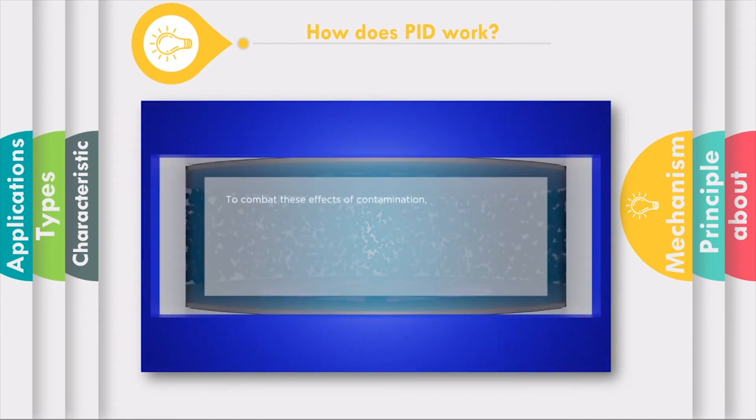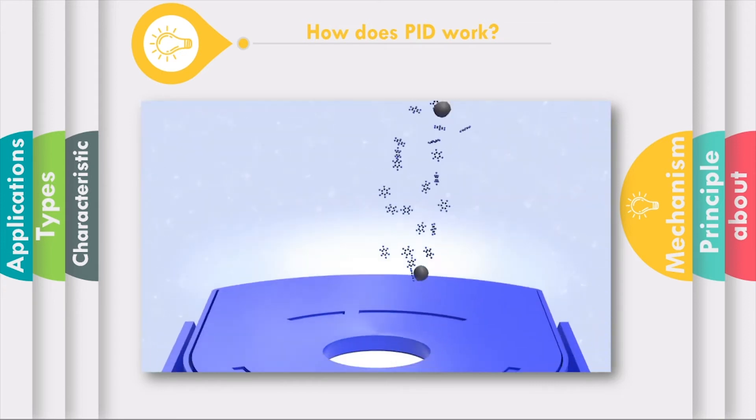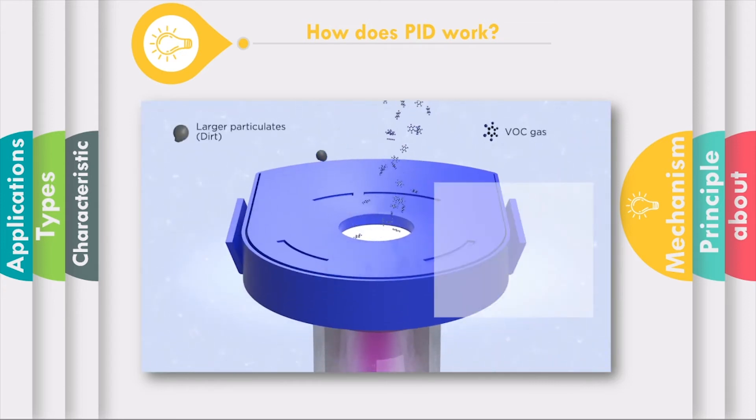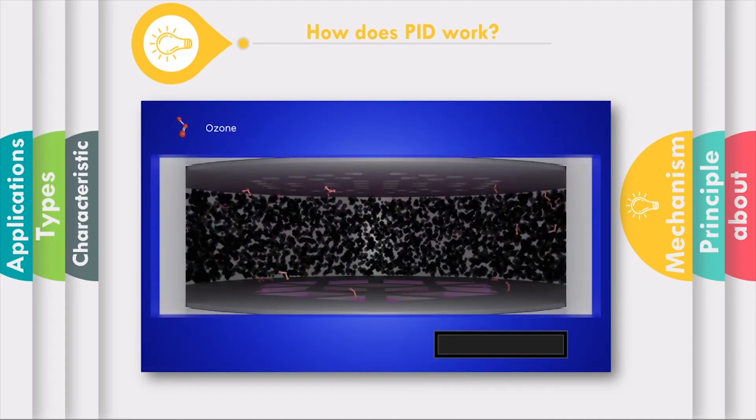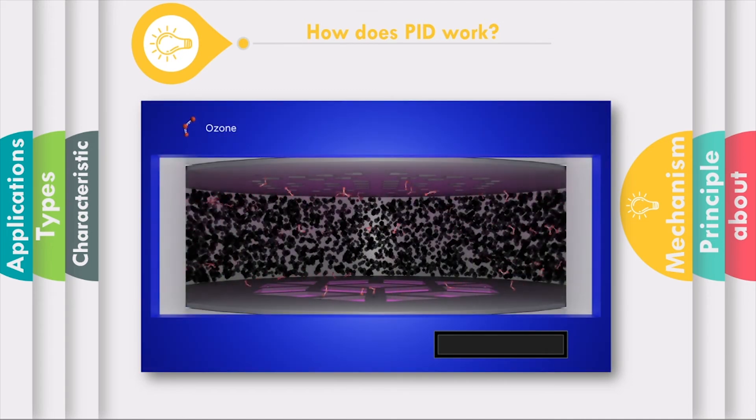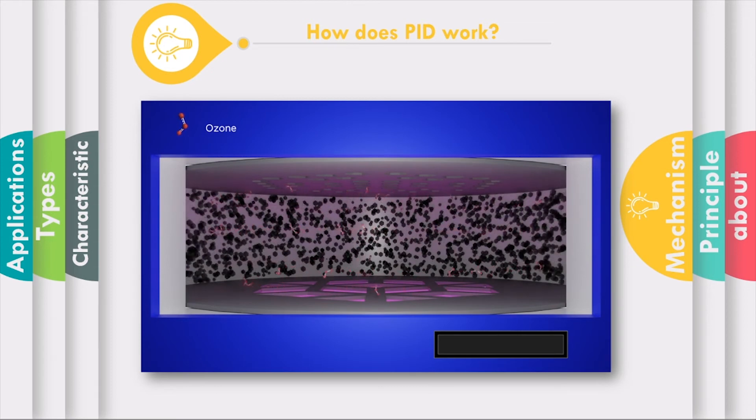To combat these effects of contamination, IonScience has a patented fence electrode and an anti-contamination system. The anti-contamination system consists of a fine woven PTFE membrane that covers the entrance of the sensor chamber. It not only helps block the path to larger particulates, it also retains ozone that is naturally generated in the sensor chamber. Ozone aggressively cleans the chamber and lamp window, helping to maintain optimal performance.